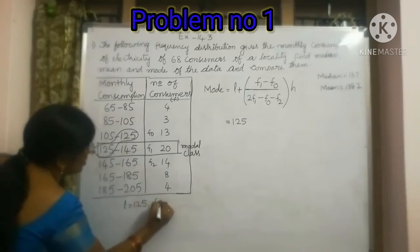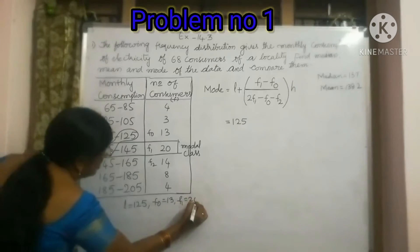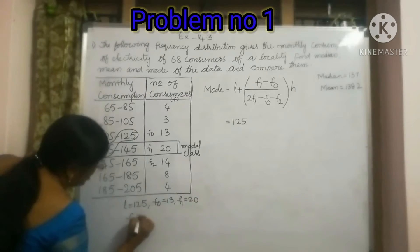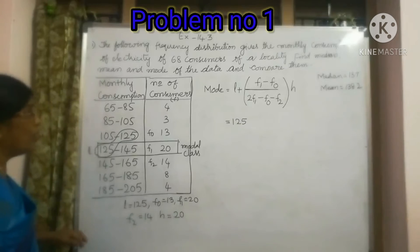So we have to write F0 is equal to 20, F2 is equal to 14, and the class size is 20. So we have got all the values.